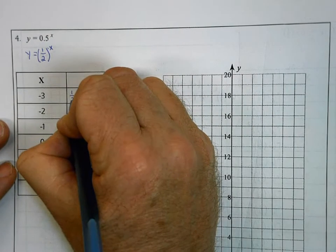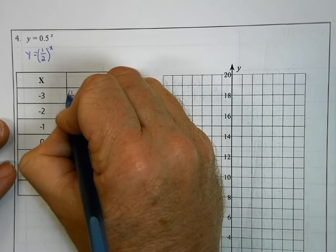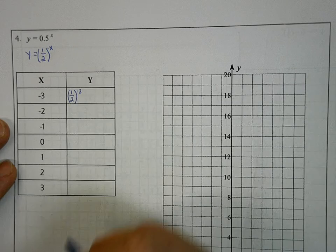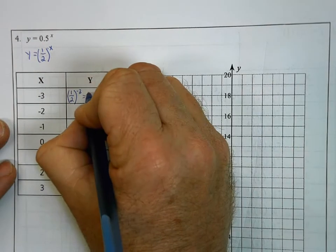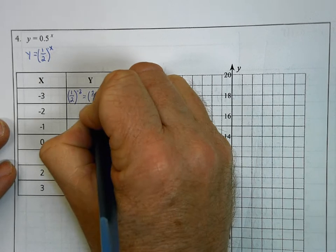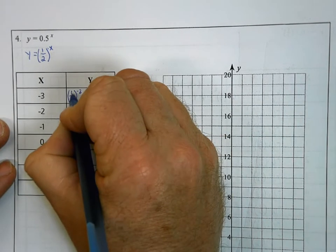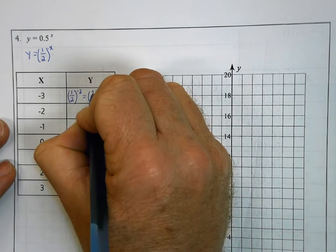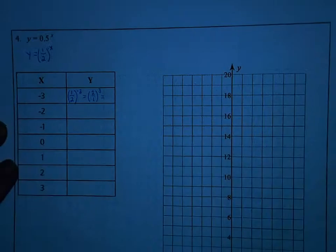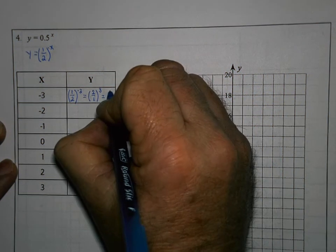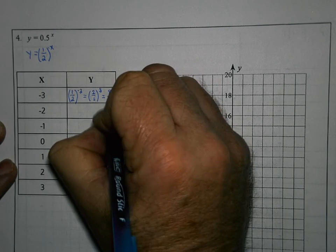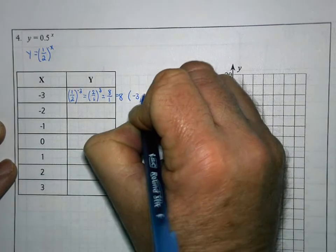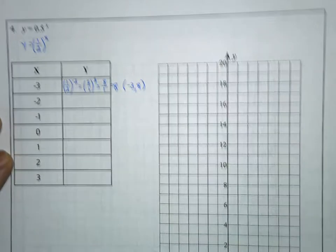I'm going to substitute negative 3 for x into my function. This becomes one-half to the negative 3 power. To rewrite this with positive exponents, I have to flip the fraction — the 1 goes to the denominator and the 2 goes to the numerator — giving me 2 over 1 to the positive 3 power. 2 to the third power is 2 times 2 times 2, which is 8, and 1 to the third power is 1. So when x is negative 3, y equals positive 8.